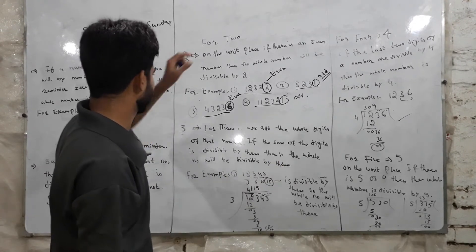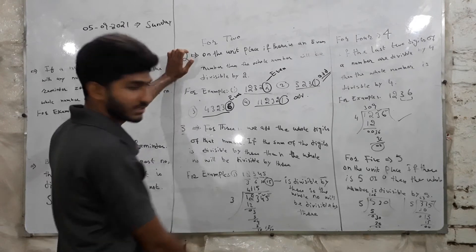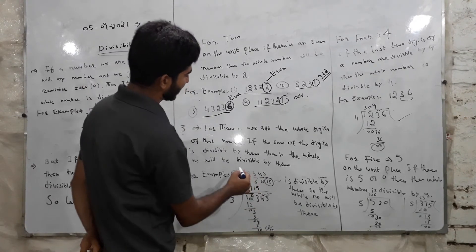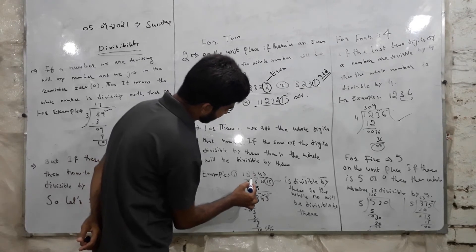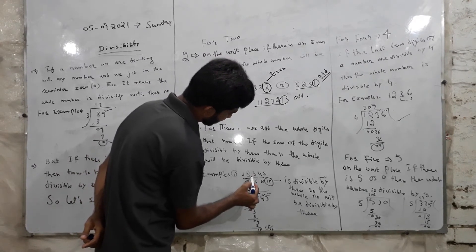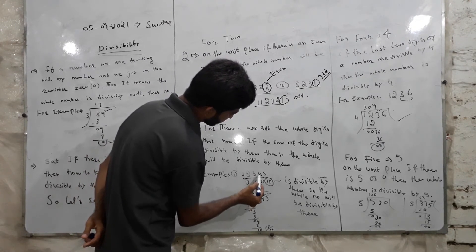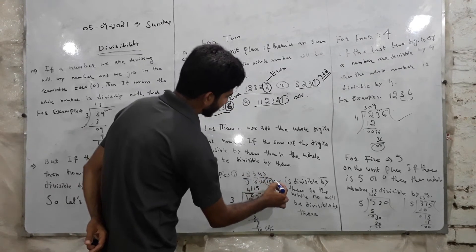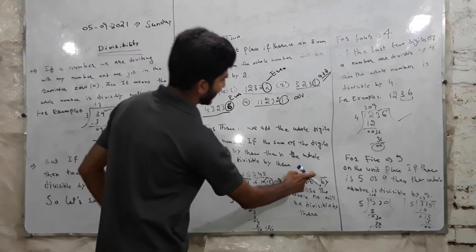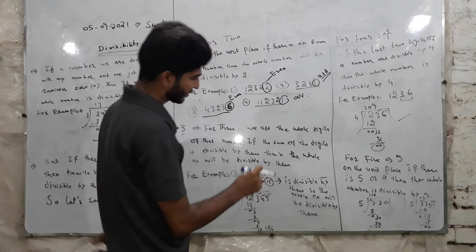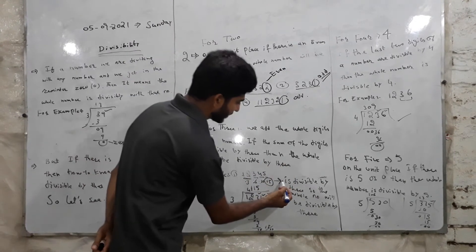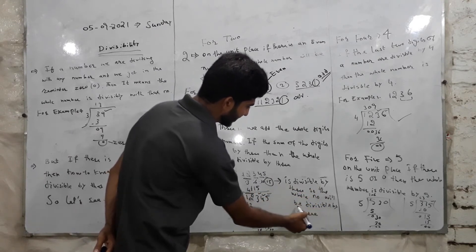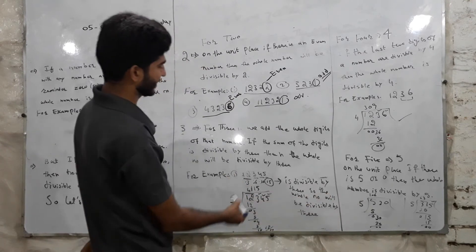For example, take the number 12345. We sum the digits: 1 + 2 + 3 + 4 + 5 = 15. Since 15 is divisible by 3, the whole number 12345 will be divisible by 3.